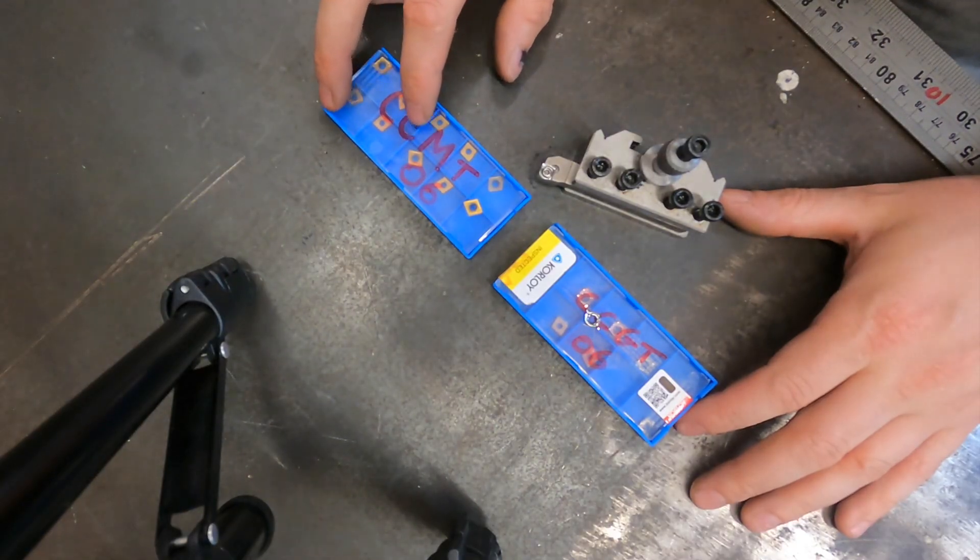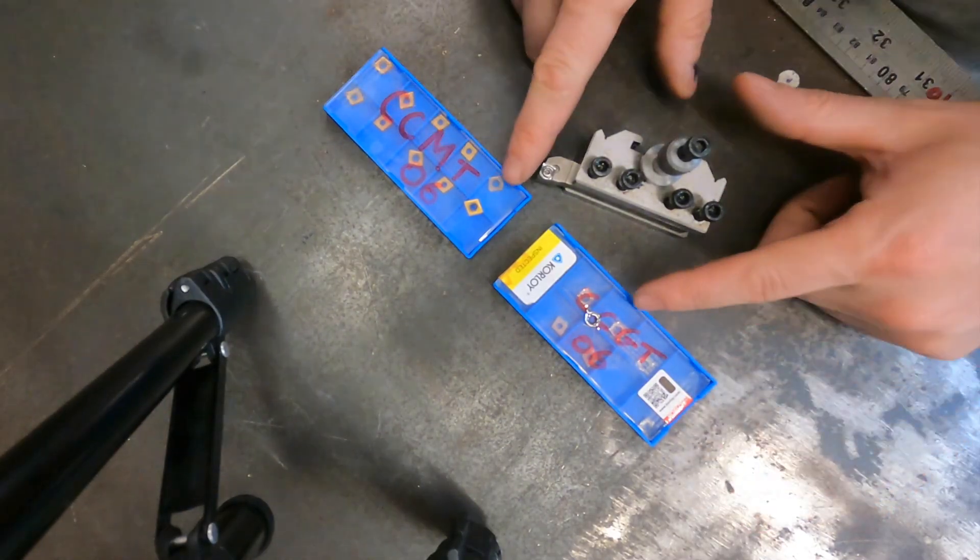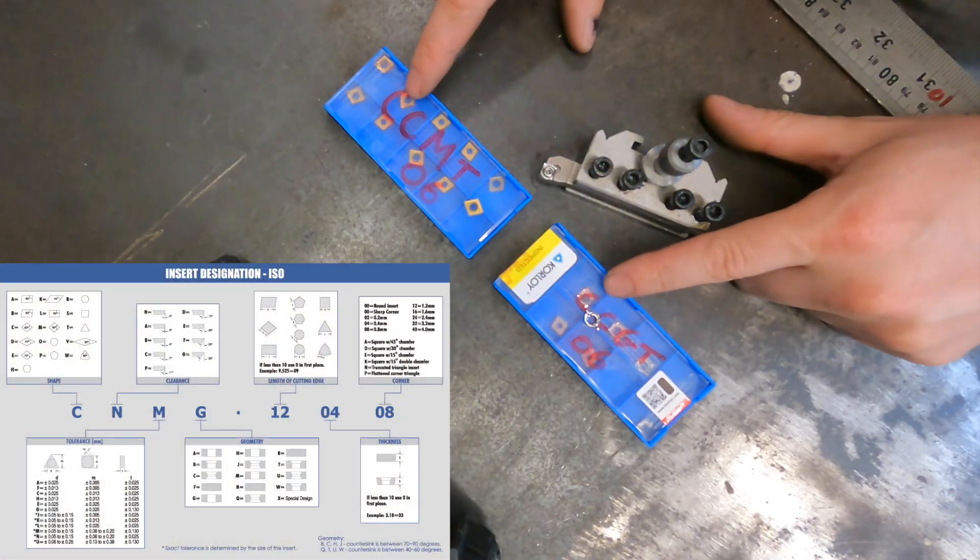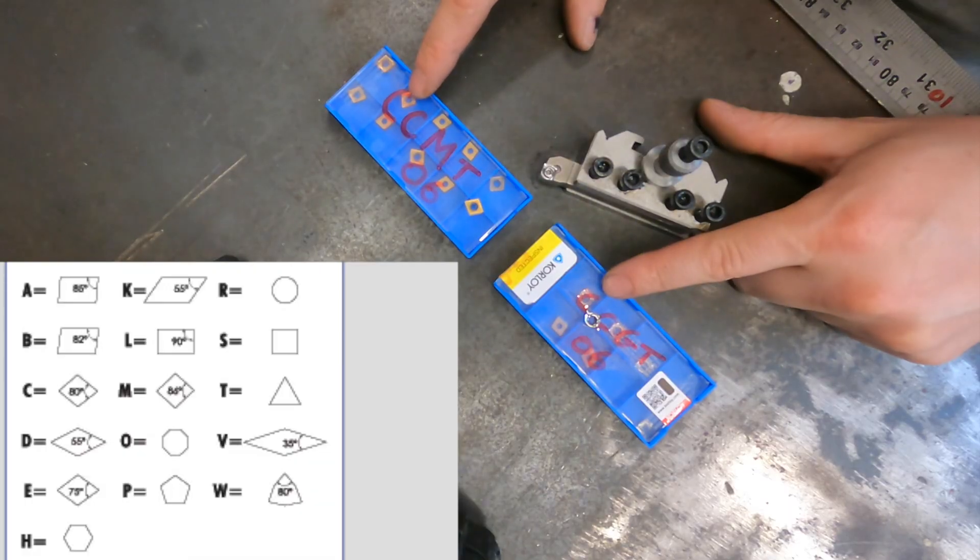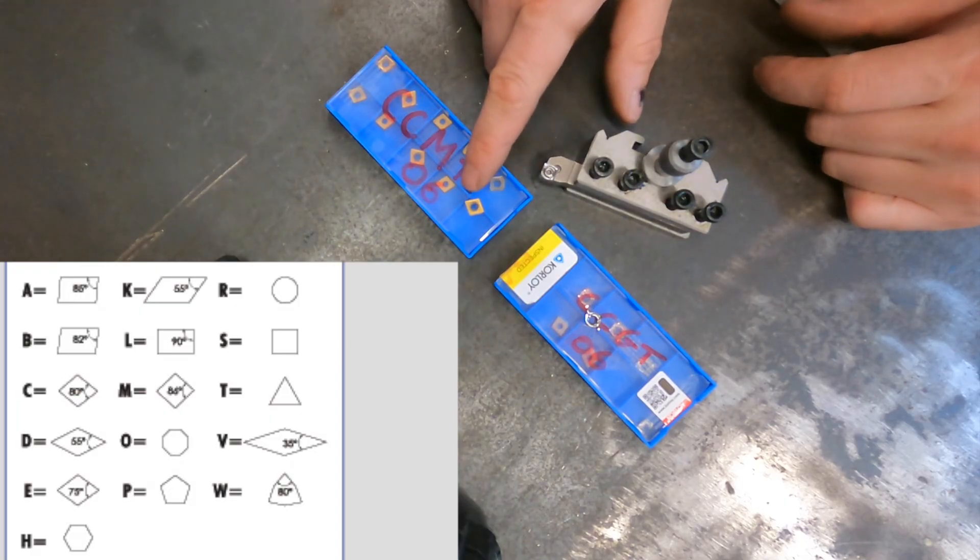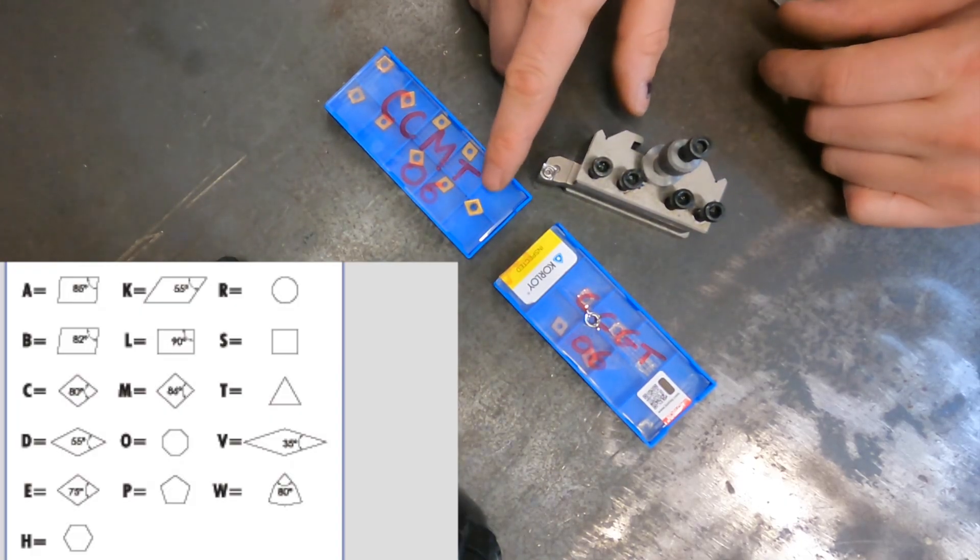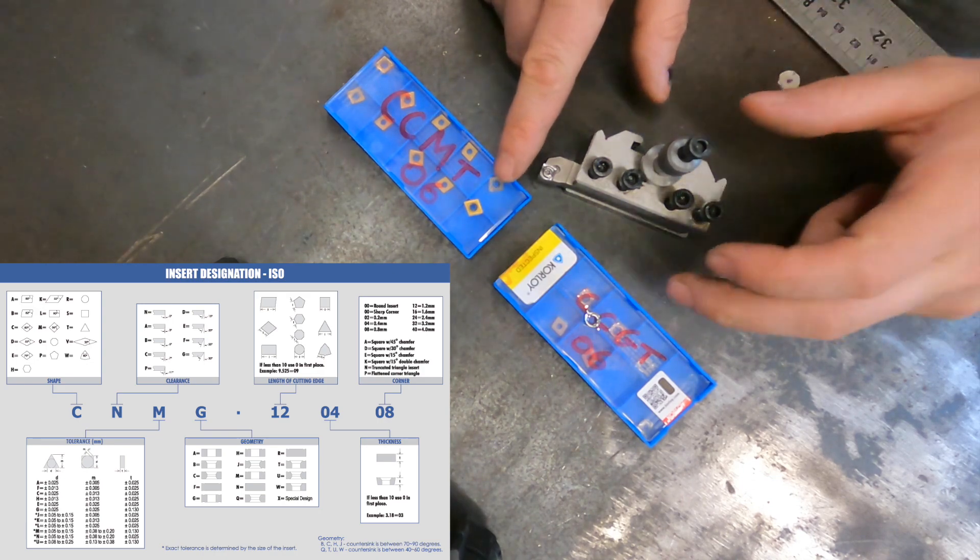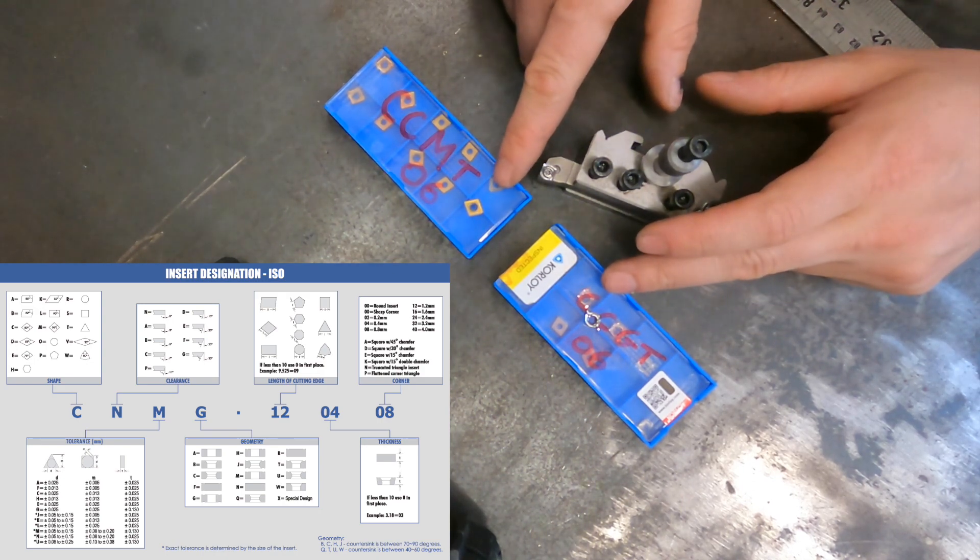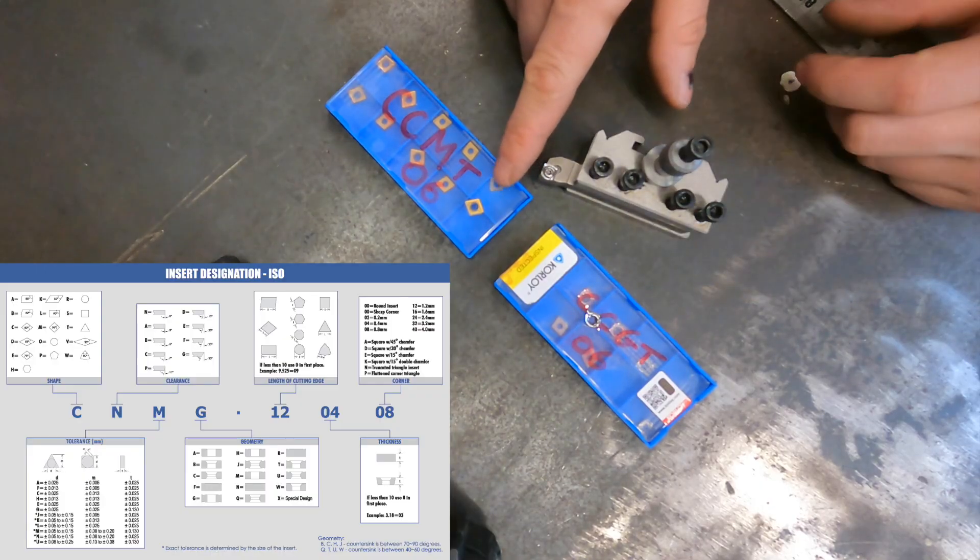Before we make any chips, let's use the ISO chart to compare these two. Starting with the first letter C, they both share that in common. The C according to this ISO chart dictates that the shape of these is a diamond shape with an 80 degree cutting angle. That's really important if you want to cut shoulders because 80 degrees is less than 90, so it allows you to get in there and cut some nice shoulders.